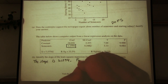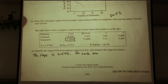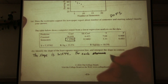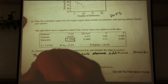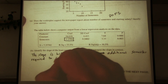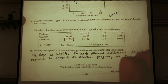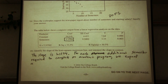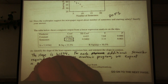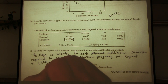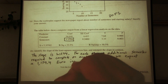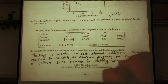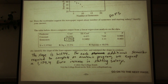Interpret the slope in context: for each additional semester required to complete an academic program, we expect a 1,159.40 euro increase in starting salary. Since the slope is in thousands of euros, we multiply by 1,000. Having the word 'expect' here is really important so we're not implying causation.